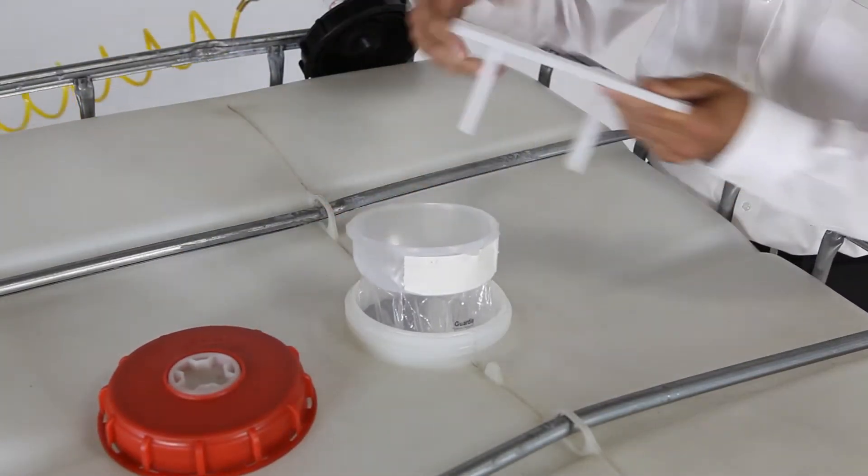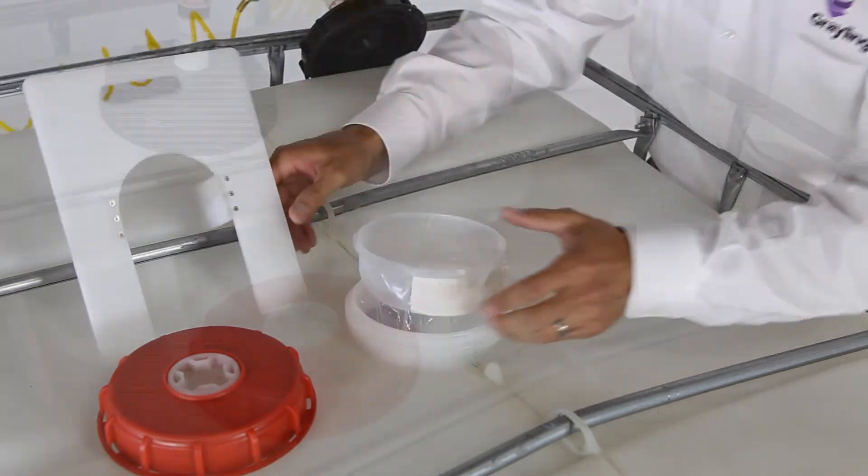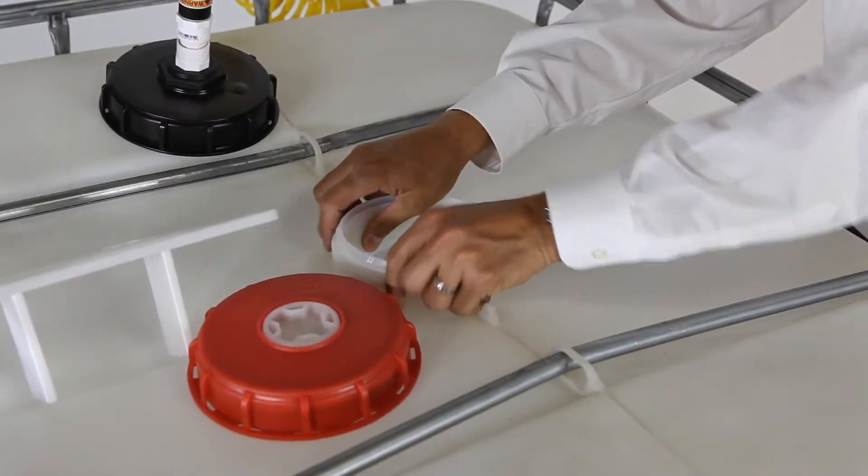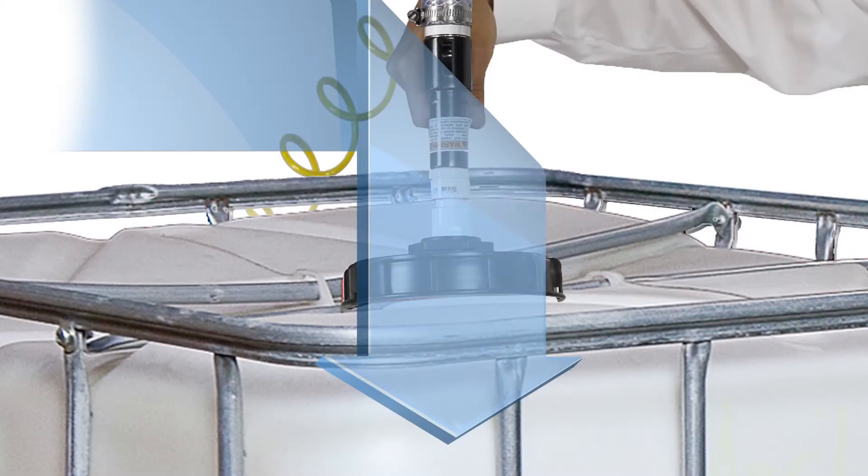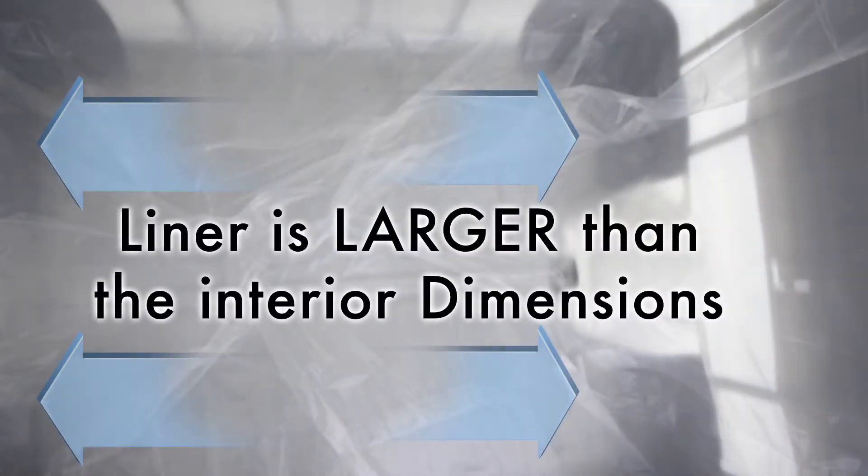Gently remove the filling deck. Lower the liner flange into the IBC fill opening. Inflate one more time. Inspect the interior. The liner should be visibly in place. There will be pleated extra material. The liner is slightly larger than the interior IBC dimensions.